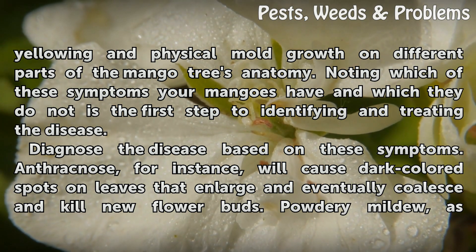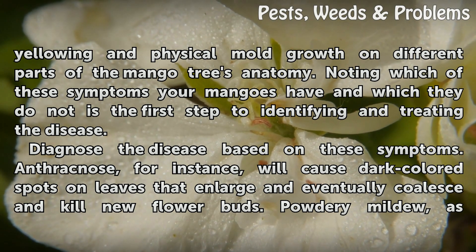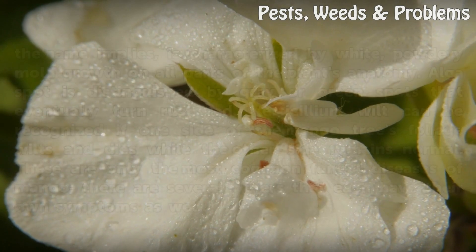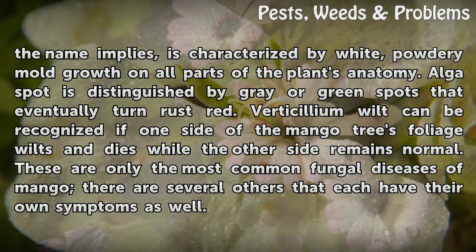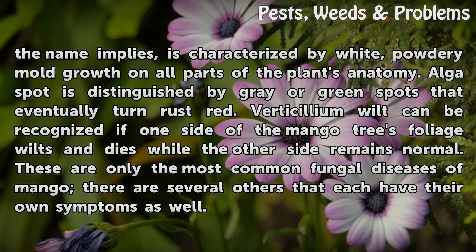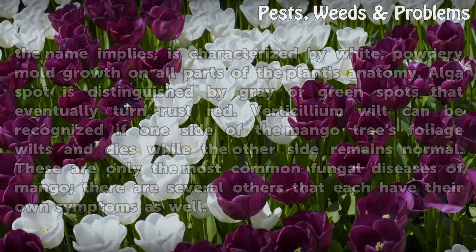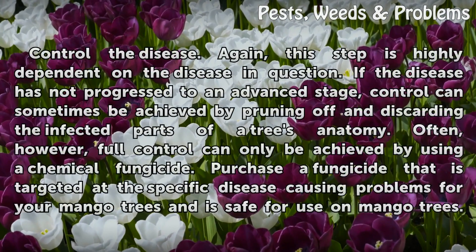Diagnose the disease based on these symptoms. Anthracnose will cause dark-colored spots on leaves that enlarge and eventually coalesce and kill new flower buds. Powdery mildew, as the name implies, is characterized by white, powdery mold growth on all parts of the plant's anatomy. Algae spot is distinguished by gray or green spots that eventually turn rust red. Verticillium wilt can be recognized if one side of the mango tree's foliage wilts and dies while the other side remains normal. These are only the most common fungal diseases of mango — there are several others that each have their own symptoms as well.